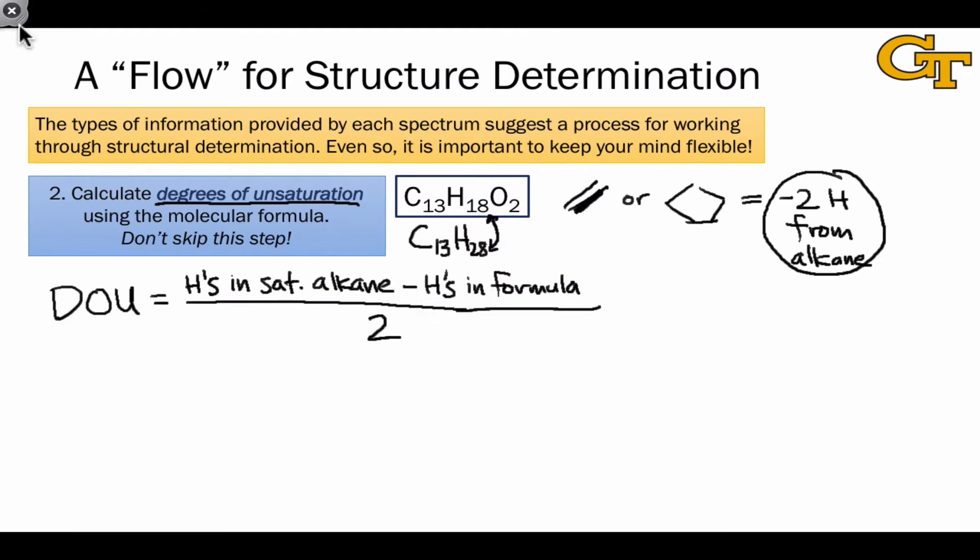It is important to consider the effects of heteroatoms. For each halogen in the structure, we subtract one unit since halogen replaces a hydrogen. For each nitrogen, we add one unit in this numerator since nitrogen is bound to two hydrogens. Oxygen actually does nothing since oxygen is bound to one hydrogen, for example in an alcohol, so it doesn't add the ability for the structure to hold more hydrogens. Based on this given molecular formula, the degrees of unsaturation in this molecule are 5.